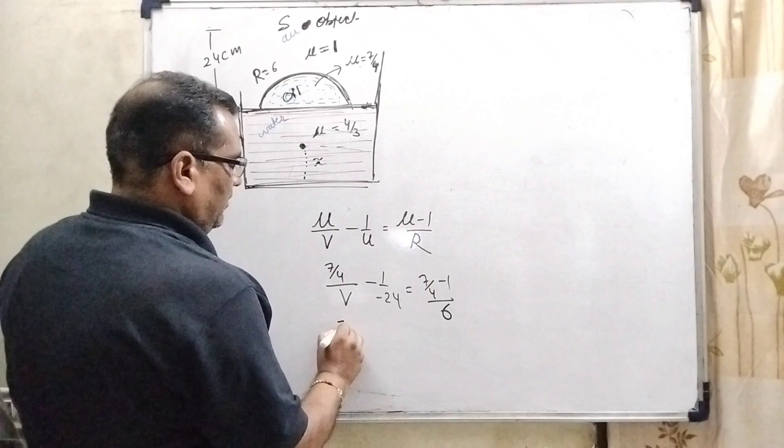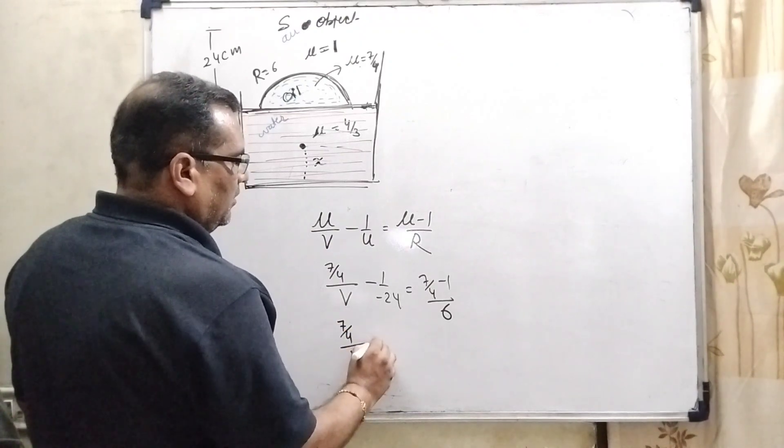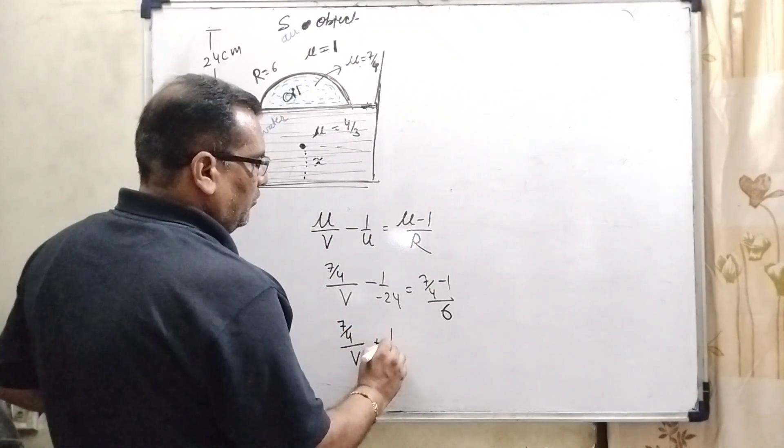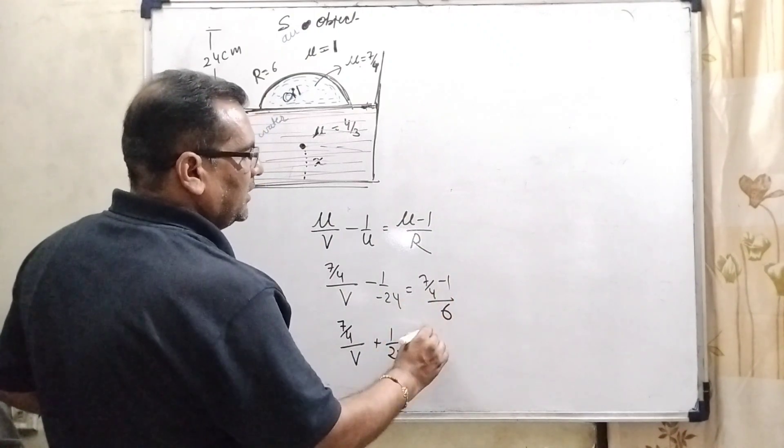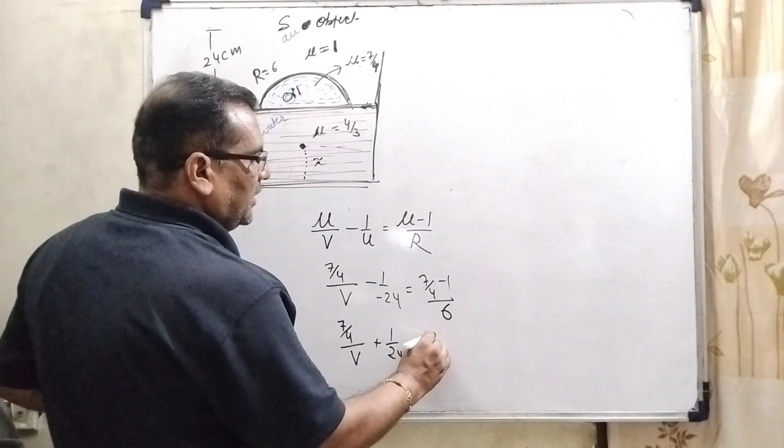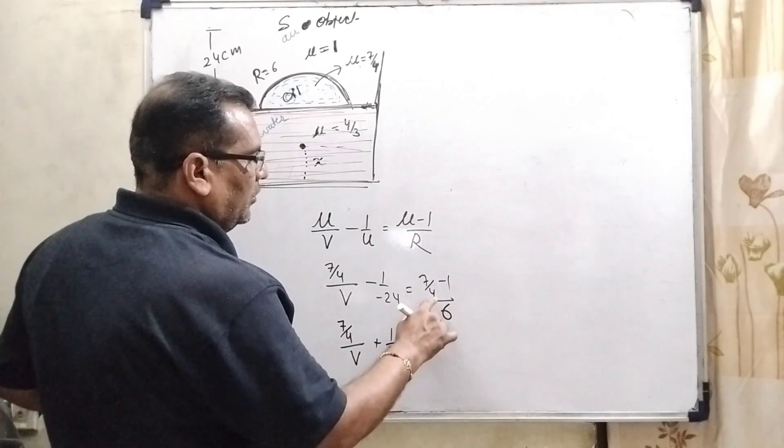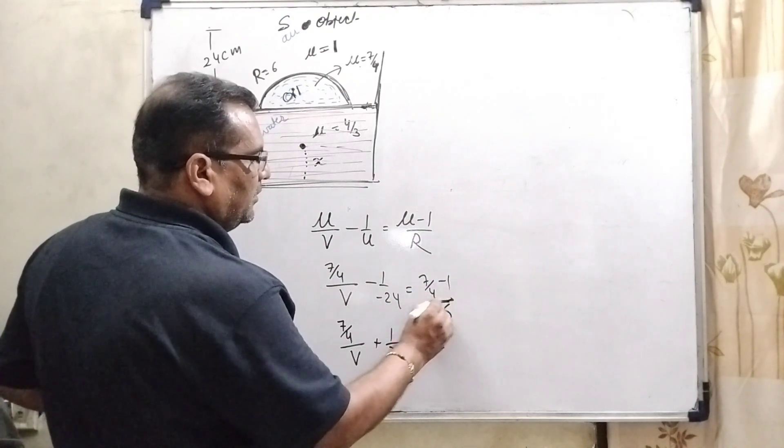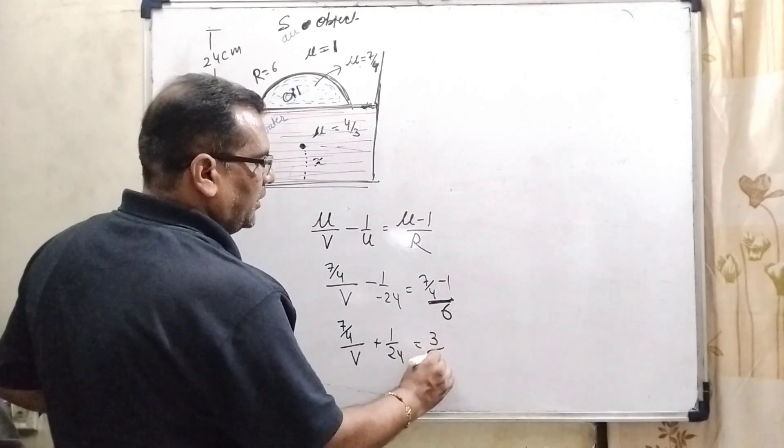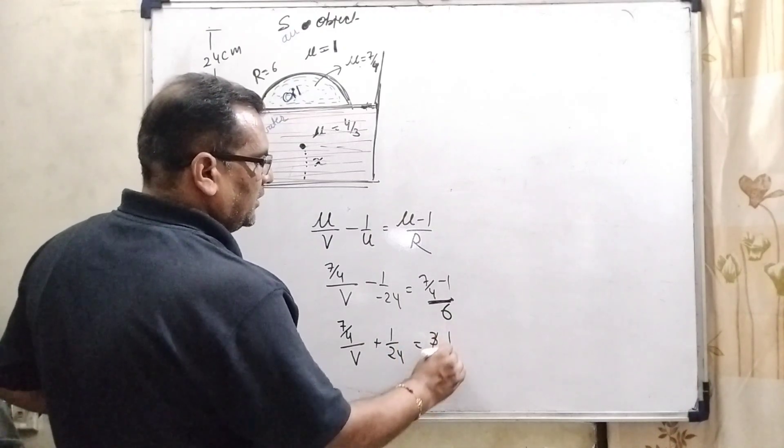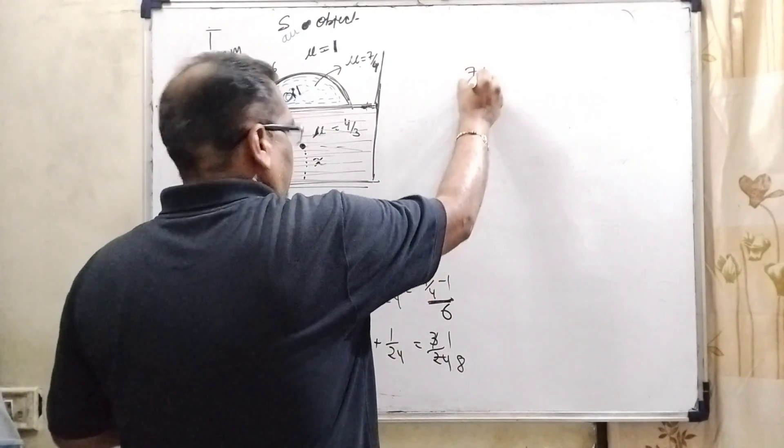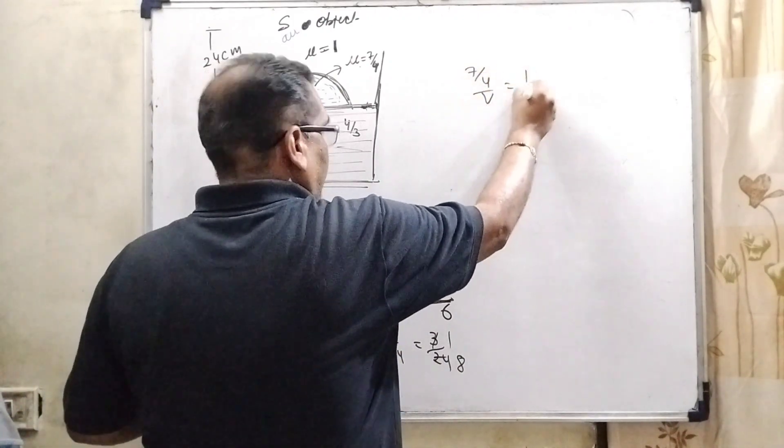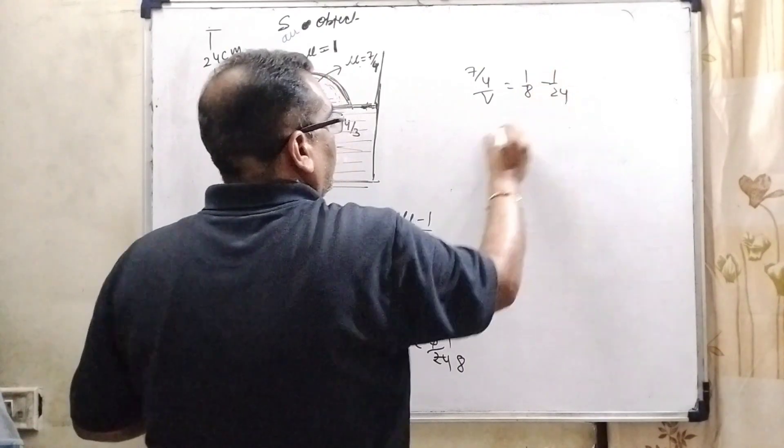Here, 7 by 4 by V minus minus plus 1 by 24. Here, 4 ones are 4. 7 minus 4, that is 3 by 4 comes in the denominator. Therefore, 4, 6 are 24. So 3 ones are 3. 3, 8's are 24. Then 7 by 4 V equal to 1 by 8 minus 1 by 24.